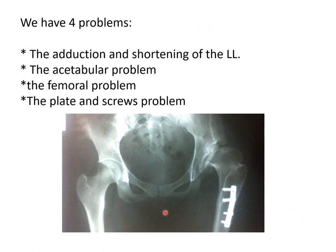Back to the AP view, to summarize, we have four major problems. The adduction and shortening of the lower limb — in this case, before the total hip replacement, I do a percutaneous adductor tenotomy. Then while operating on the hip, I release the abductors from their attachment to the greater trochanter by cutting the anterior one-fourth, one-third, one-half, or even three-quarters of the attachment, keeping just one-fourth attached.